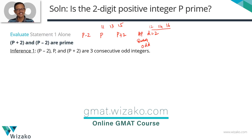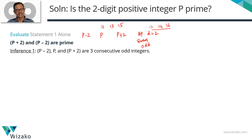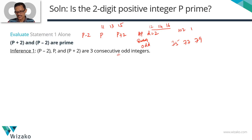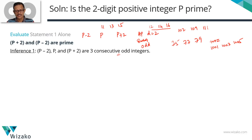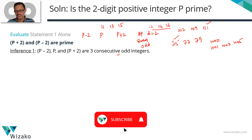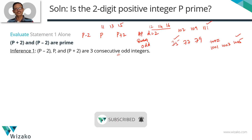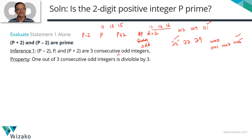The second result we'll use is this: in three consecutive odd integers, one of those three numbers is always divisible by 3. Let's verify with examples: 75, 77, 79 — 75 is divisible by 3. 107, 109, 111 — 111 is divisible by 3. 1001, 1003, 1005 — 1005 is divisible by 3. So the property is: in three consecutive odd integers, one of them is always divisible by 3.